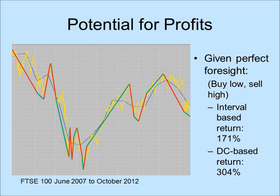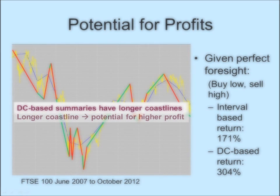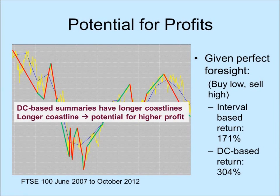Obviously no one has perfect foresight. But this analysis shows that investing resources in directional change research has higher potential than interval-based research, not to mention the fact that the latter is more crowded than the former. In all our observations, directional change-based summaries have longer coastlines than interval-based summaries.